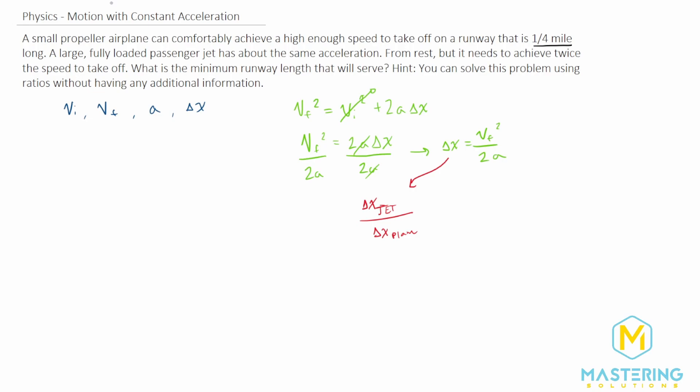So let's come over here. So we have delta x for the jet divided by the delta x for the plane. And if we plug those in, we get v final squared divided by 2 times the acceleration. And this is all for the jet, of course, divided by the exact same thing for the plane. So v final squared divided by 2 times the acceleration.